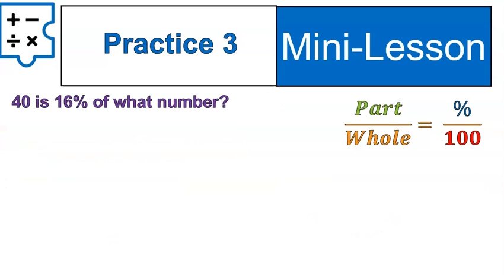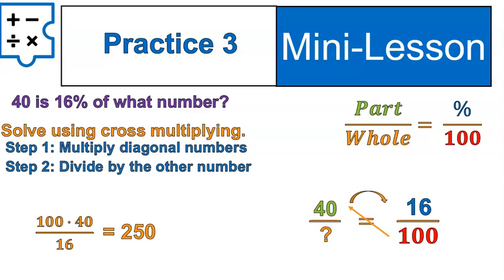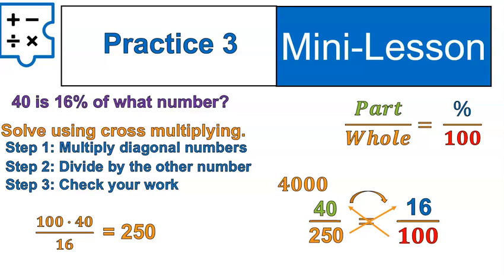Practice question number three: 40 is 16 percent of what number? Pause and try to set it up and solve it. 16 percent is the easiest thing to put into this proportion. 40 is the part and the whole number is our unknown. We solve using cross-multiplying — multiply the diagonal numbers, divide by the remaining number: 100 times 40 divided by 16 gives us 250. We double check: 100 times 40 is 4,000, and 250 times 16 is also 4,000. So our work is correct.